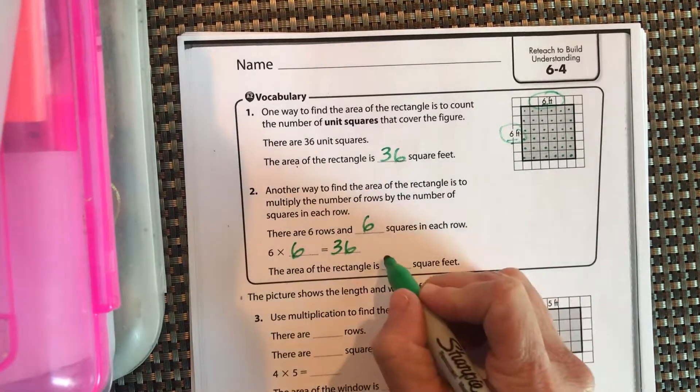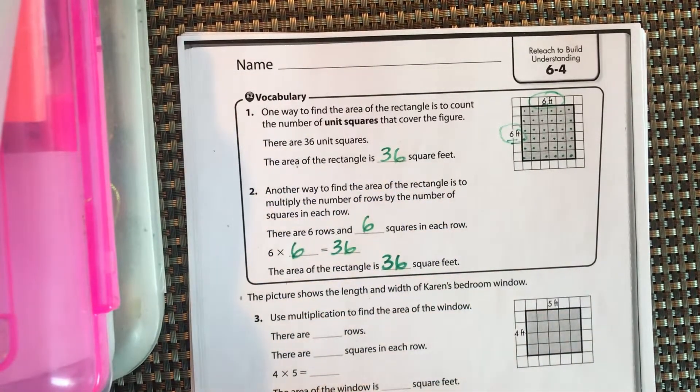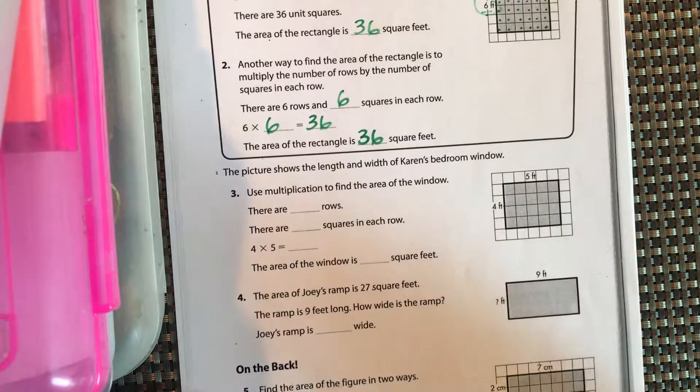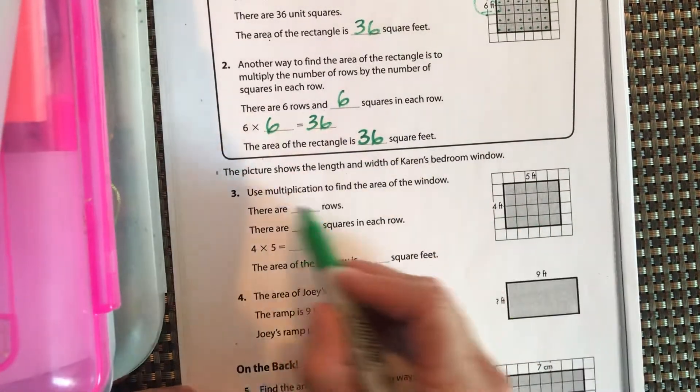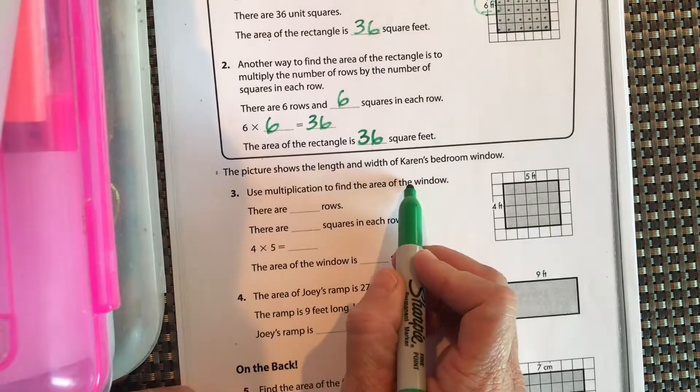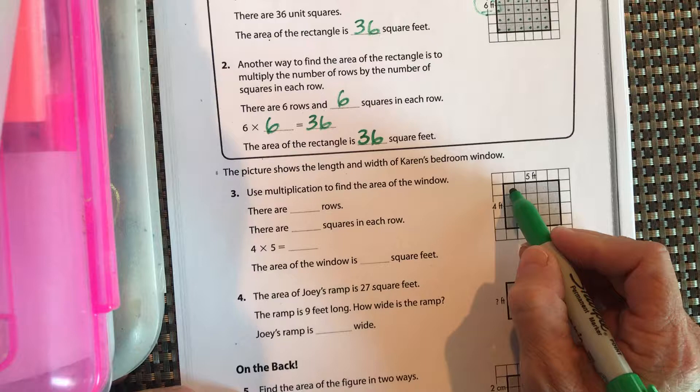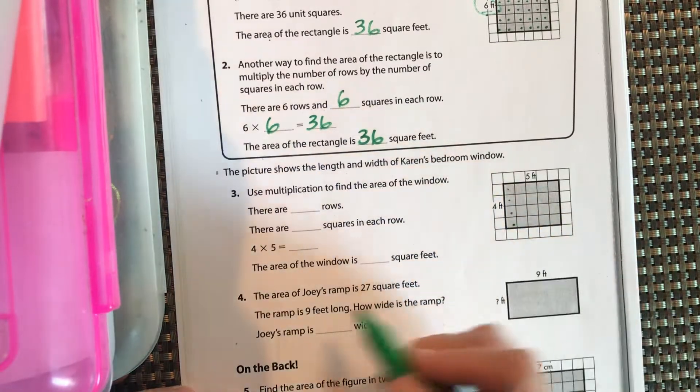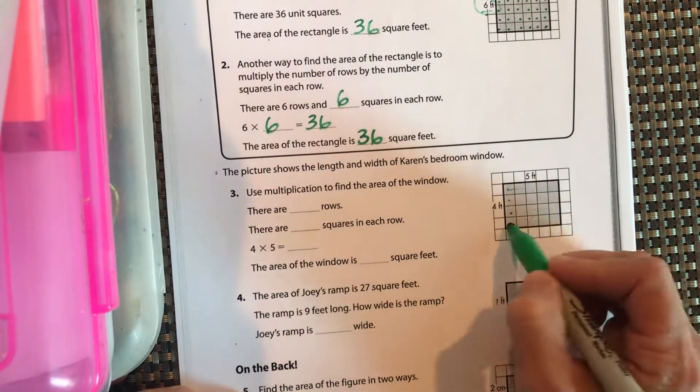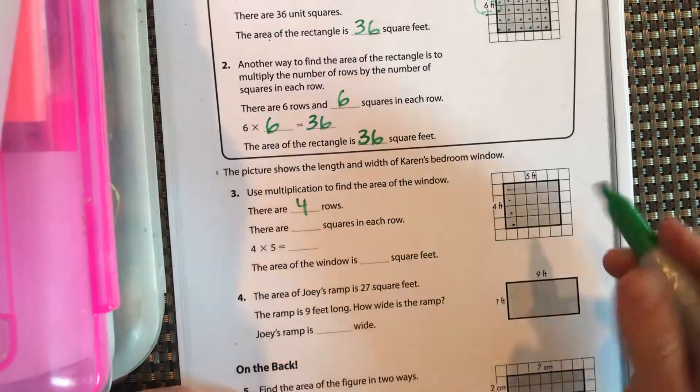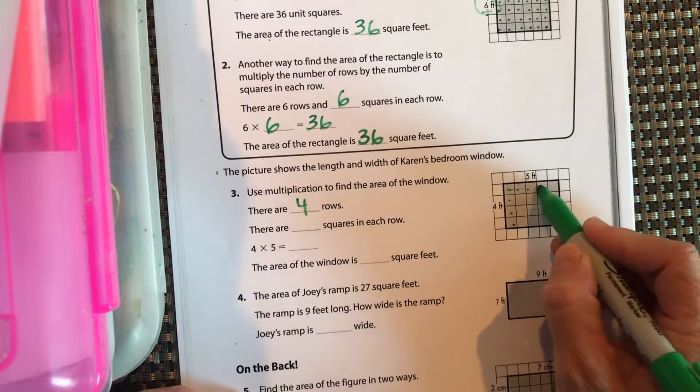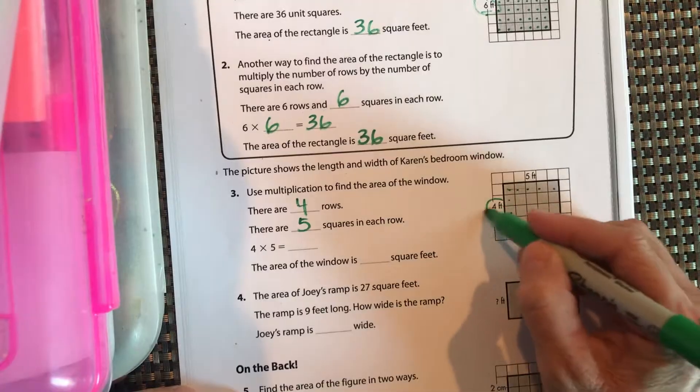So then if we look here, use multiplication to find the area of the window. This is Karen's bedroom window. We have four rows going across, right? One, two, three, four. And there are one, two, three, four, five, five squares in each row. Again, remember it's an array.